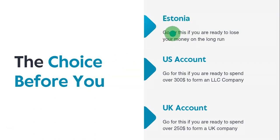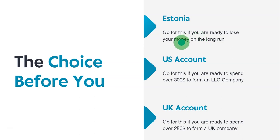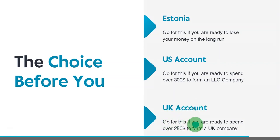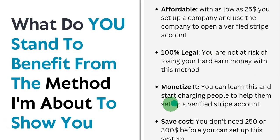So before I close this video, your choices are: go for the Estonia Stripe account if you are ready to lose your money in the long run, because Stripe will eventually find out and block your account. You can go for the US option if you are ready to spend over $300 to form an LLC company. Or you can go for the UK Stripe account if you are ready to spend over $250 — almost the same thing if money is not your problem.